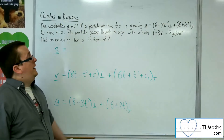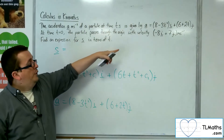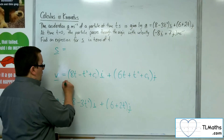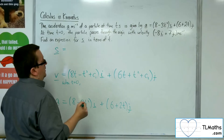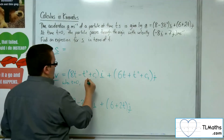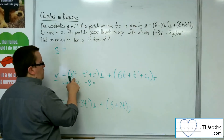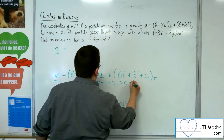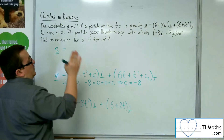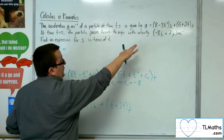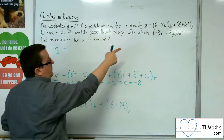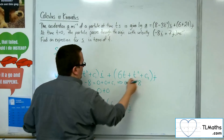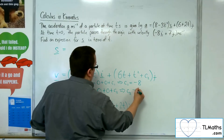I can now use the initial condition that the initial velocity is minus 8i plus 7j metres per second. So when t is 0, we have that minus 8 is equal to 0 plus 0 plus c1. So c1 is equal to minus 8. And also the j component of the initial velocity is equal to 6 lots of 0 plus 0 squared plus c2. So c2 is 7.